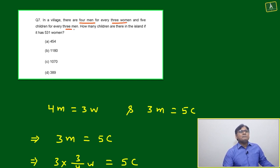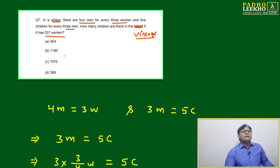How many children are there in this village if it has 531 women? The question tells us four men is equal to three women, and three men equal to five children.